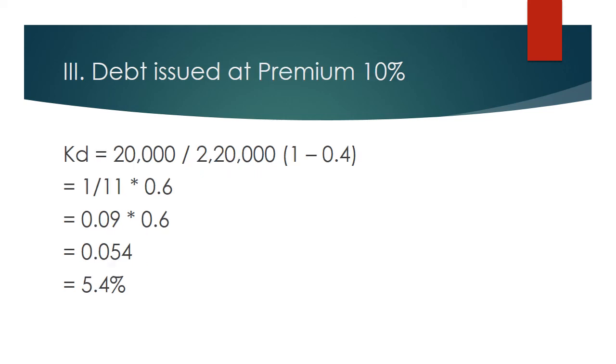Now, if it is issued at a premium of 10%, what would happen? It is 20,000 upon 2 lakh 20,000 multiplied by the tax rate. So, it becomes 1 upon 11 because 20 upon 220 is 1 upon 11 multiplied by 0.6, you get 0.054 that is 5.4%. So, when it is issued at a premium, the cost of debt has reduced to 5.4%. That is your cost of debt when the debentures are issued at a premium of 10%.